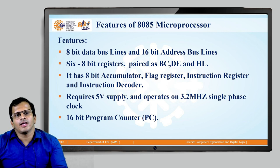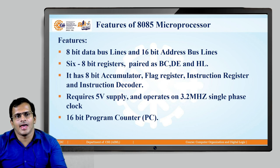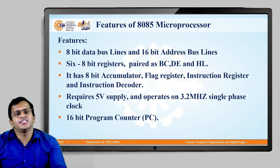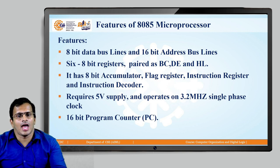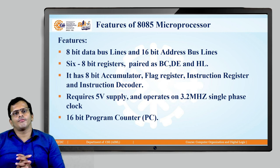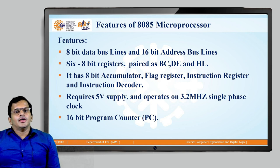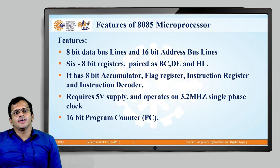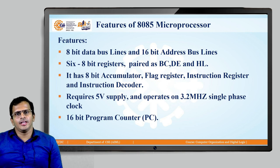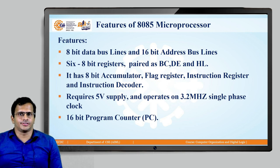The 8085 has 8-bit data lines and 16-bit address lines. The registers represented are 6 registers, each of 8 bits. The registers are B, C, D, E, H, and L. Those are the 6 registers.